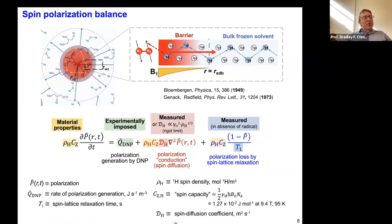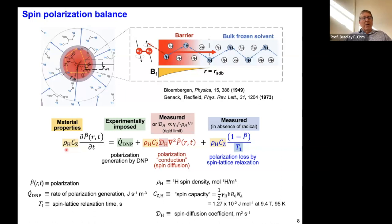Polarization is what we're going to measure. Time is what we're paying attention to, but then we have the material properties — how many protons are in our ensemble. We use DNP juice with some partial deuteration, and that affects the density of protons in the matrix. C_Z — the spin capacity — will be different for different nuclei, different spins, different magnetic fields and temperatures. These are basically material properties.